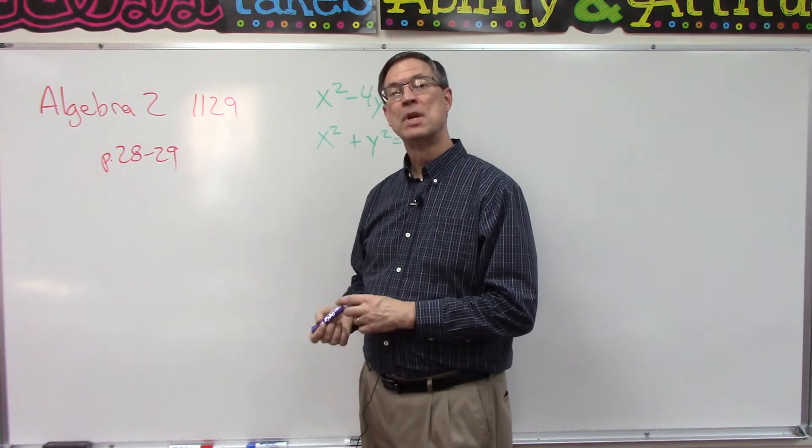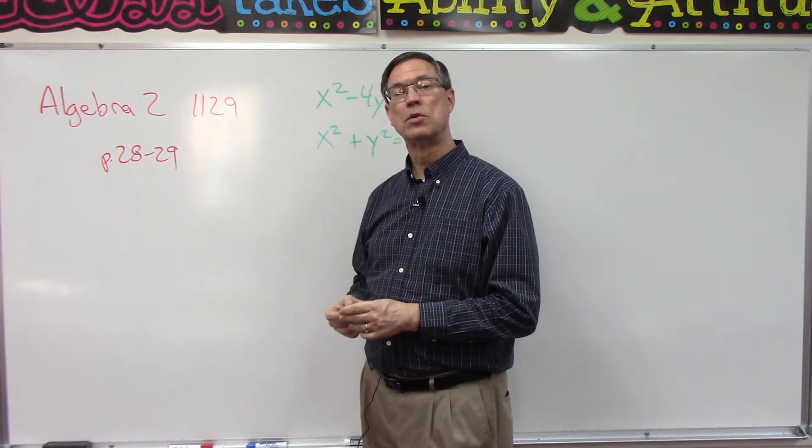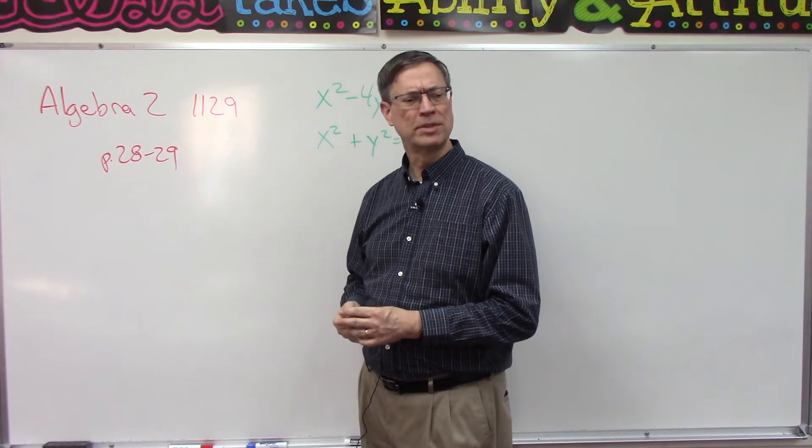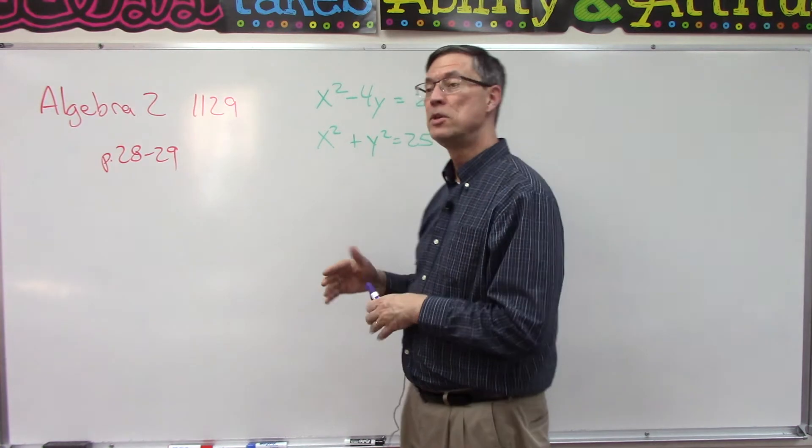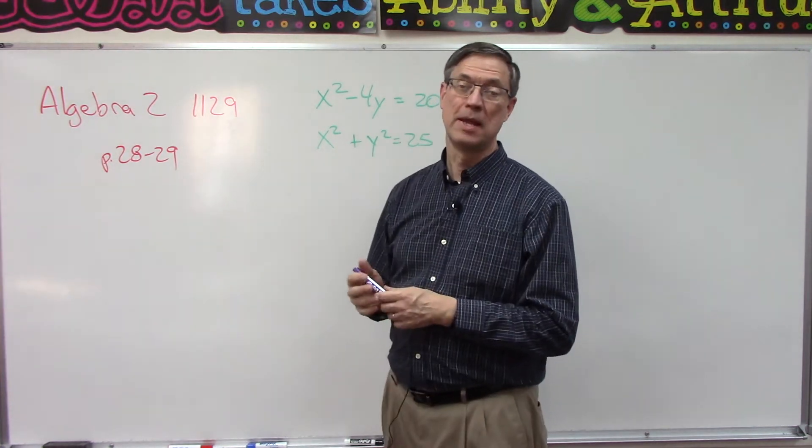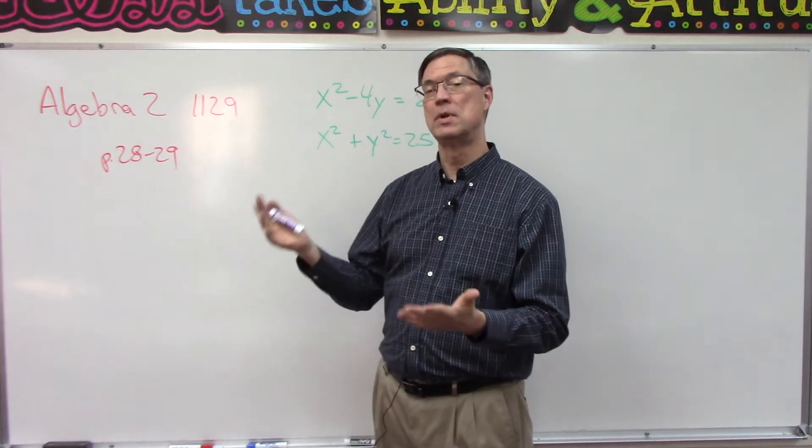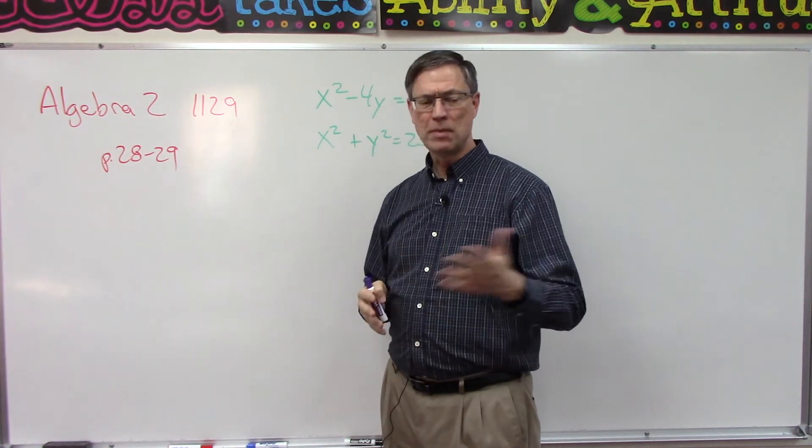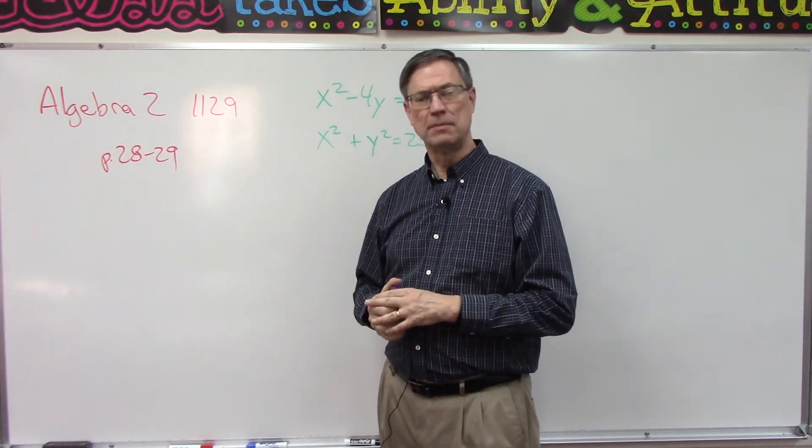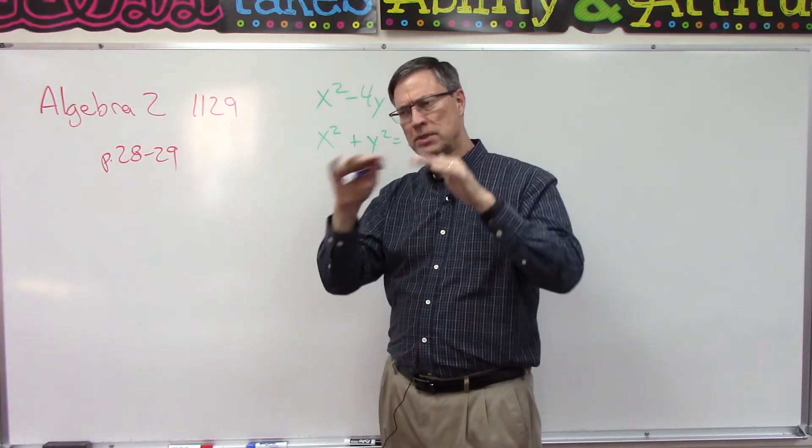Okay, I'm going to demonstrate that for you here in just a minute. The other one is called linear combination. Basically, you're multiplying both equations through and then you're going to add the equations and try to get like x squared to cancel out or y squared to cancel out. The two examples they give are I think easy enough to follow if you look at all the steps.